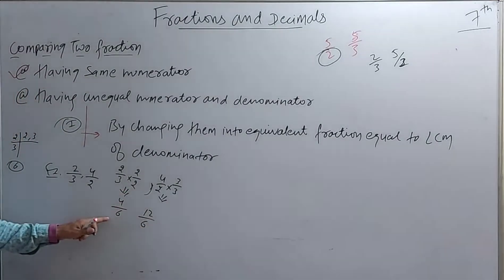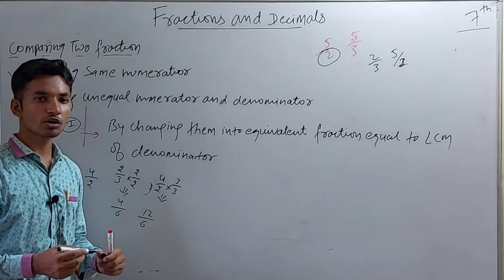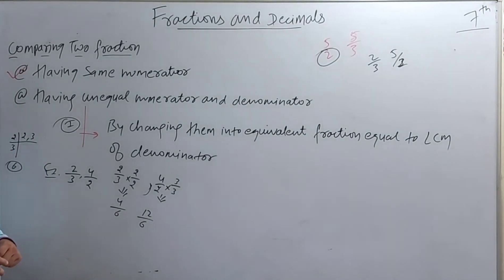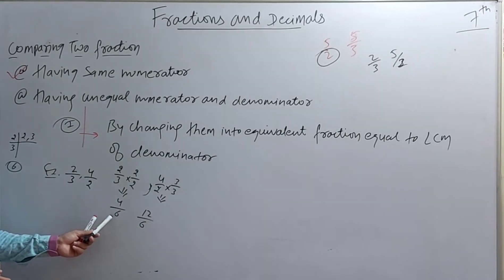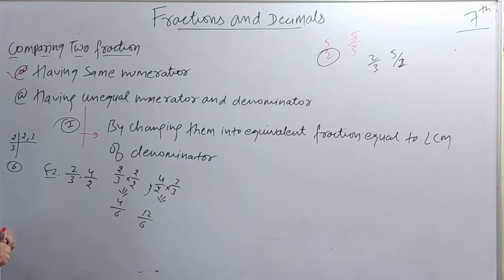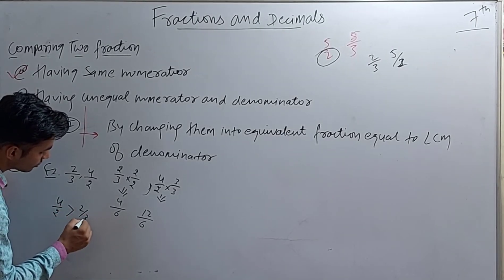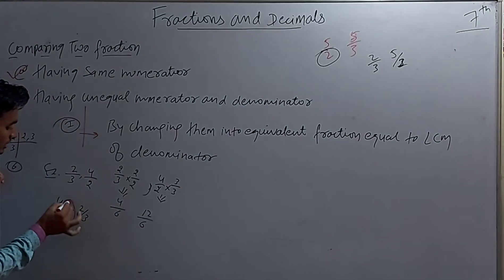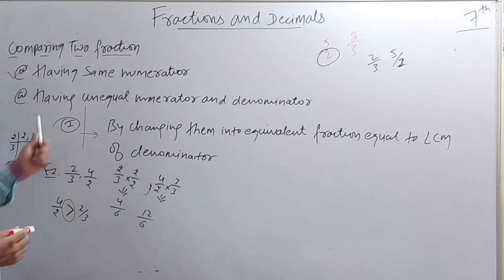So we get 4/6 and 12/6. Now we have the same denominator, so we can easily find which is the smallest and which is the greatest. 12/6 is greater, so 4/2 is greater than 2/3.